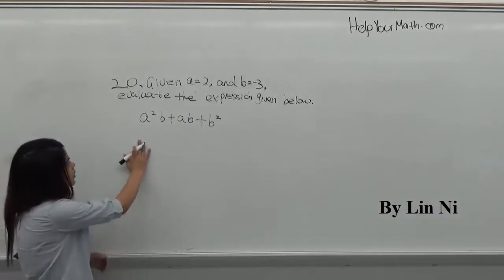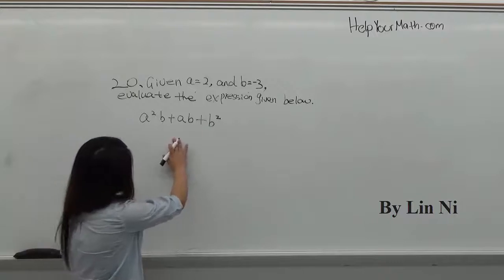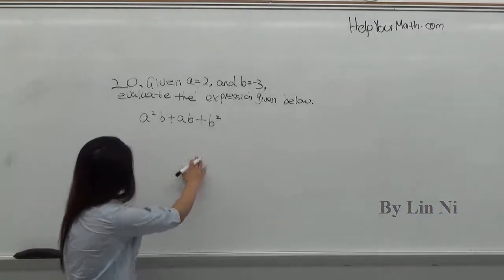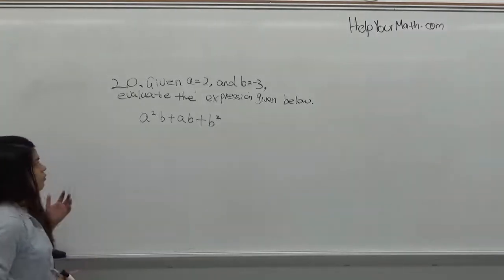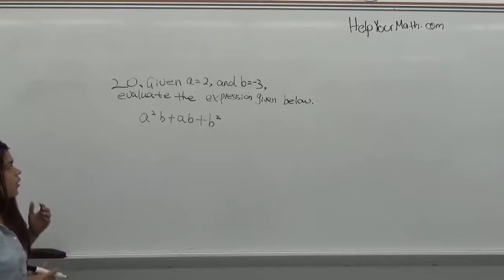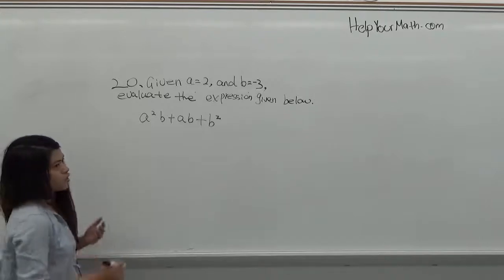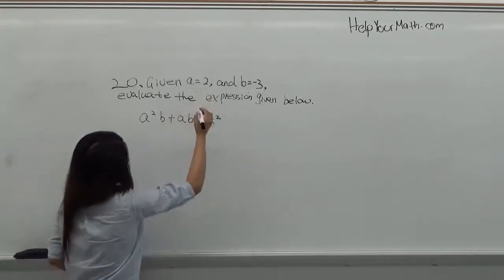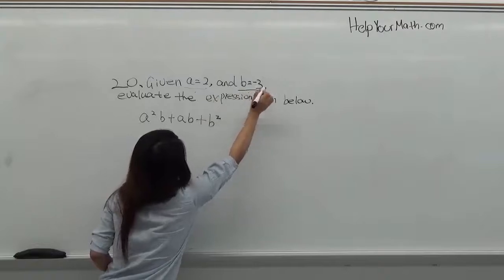So you see the problem here, a squared b plus ab plus b squared. If you don't know what the value for those variables, then you cannot evaluate for it. But the question already gives you the value for a and b, which is here. a equals 2 and b equals negative 3.